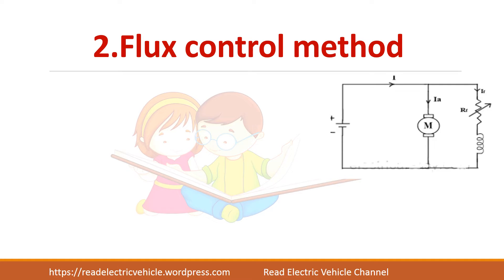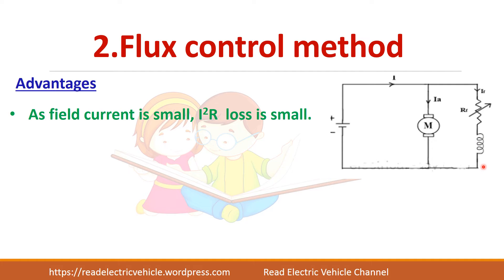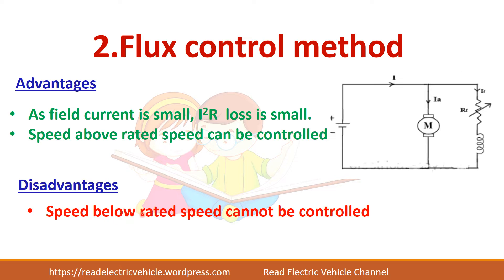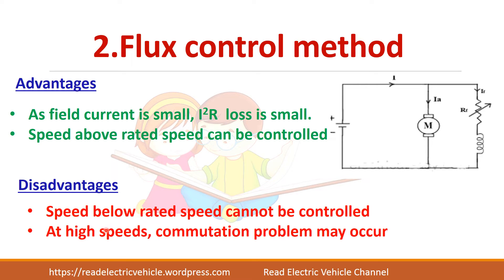The advantages of the flux control method are that the field current will be small, so the I-squared-Rf losses will be small, and you can achieve speed control above rated speed. The disadvantage is that you cannot get speed control below rated speed. Another thing is that at high speeds, because we are reducing the flux and increasing the speed, you may get commutation problems.